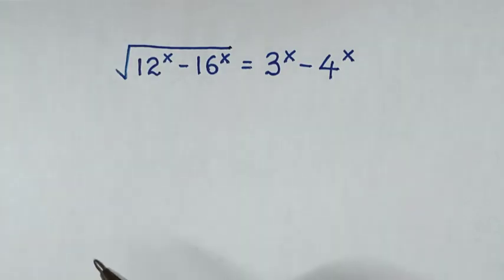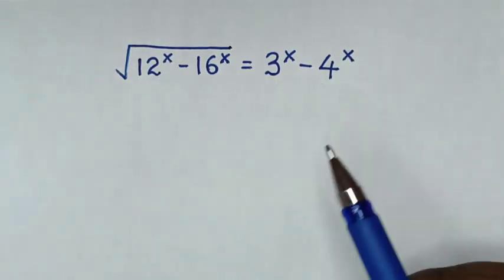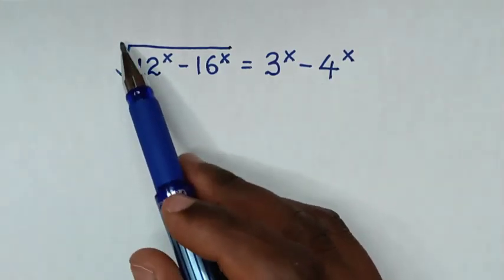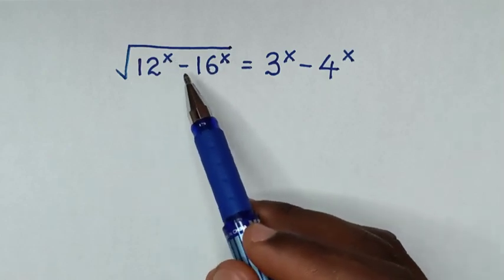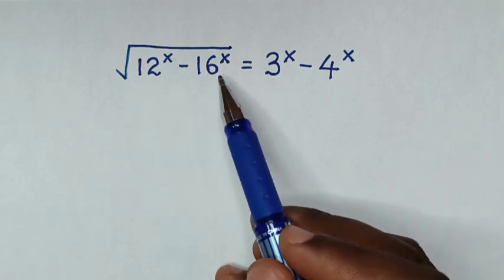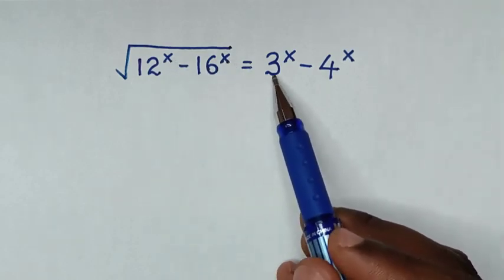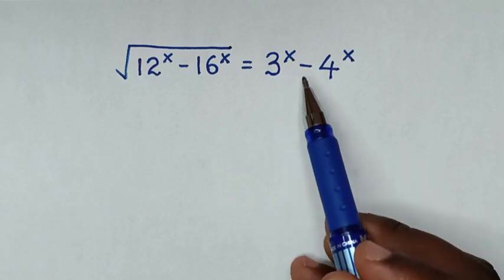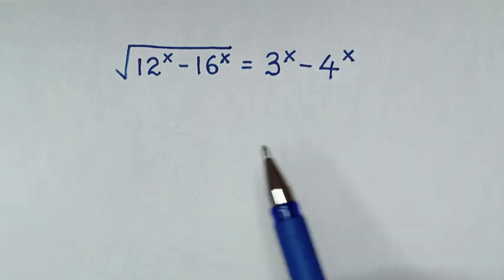Hello, you are welcome to solve this math problem, which is: square root of (12^x minus 16^x) is equal to 3^x minus 4^x. We need to find the values of x from this equation.